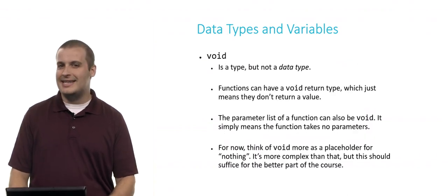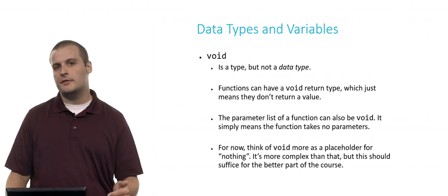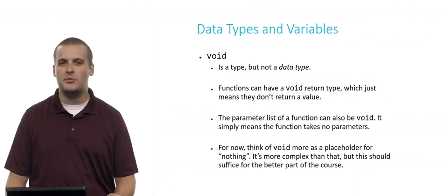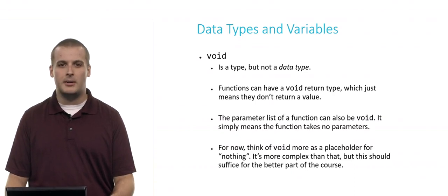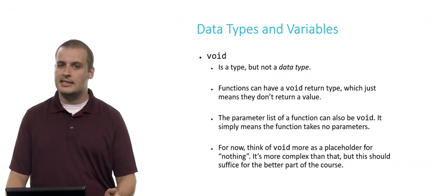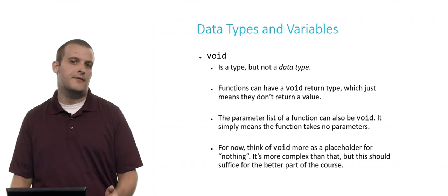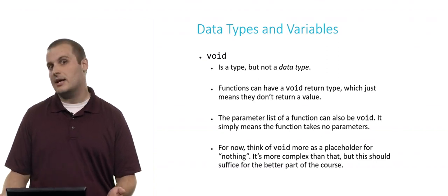Now, this is not a data type. This is a type, and it's called void. And I'm talking about it here because we've probably seen it a few times already in CS50, and you might be wondering what it's all about. So void is a type. It does exist, but it's not a data type. We can't create a variable of type void and assign a value to it. But functions, for example, can have a void return type.